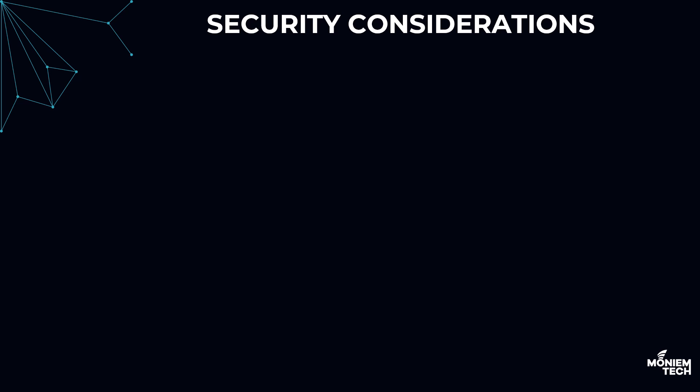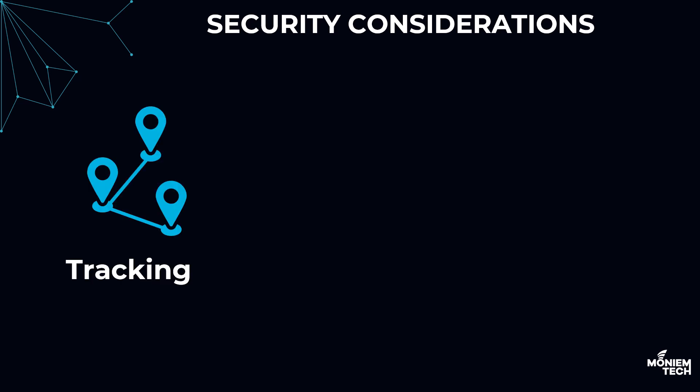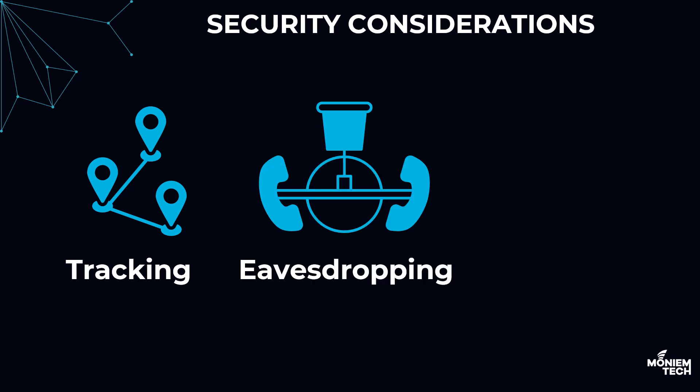Now we need to understand the security considerations. Why does IMSI need protection? There are three main reasons. First is tracking — if exposed, IMSI can be used to track the user's location by criminals. Second is eavesdropping — an attacker can intercept communications if they obtain the IMSI.